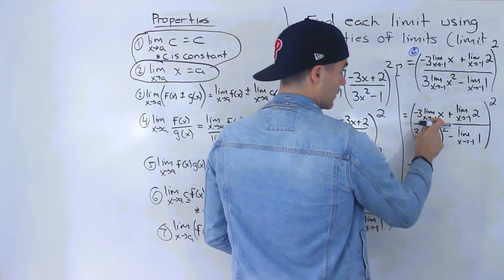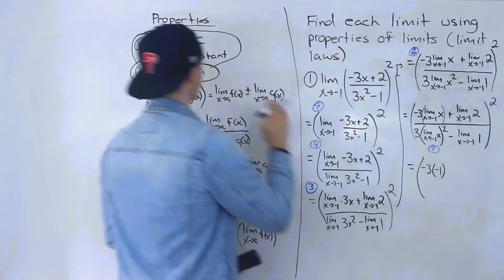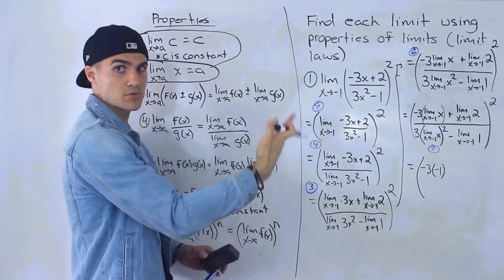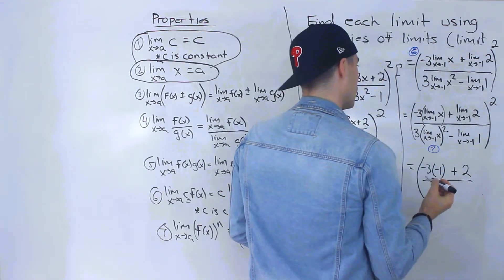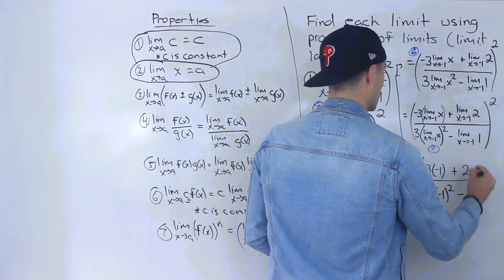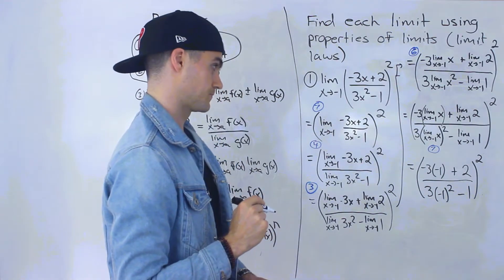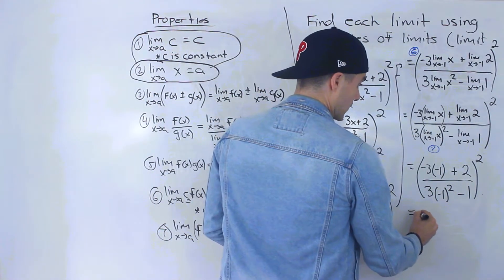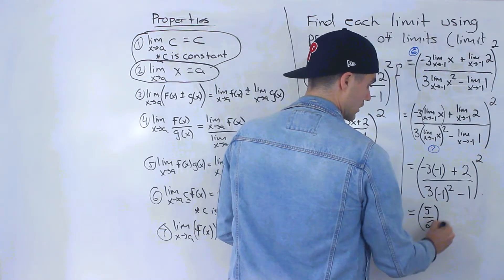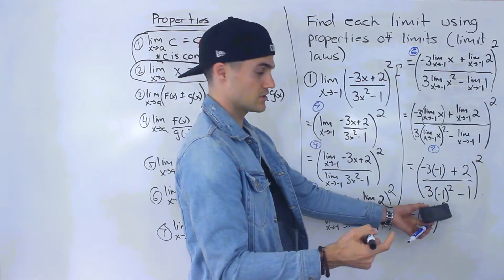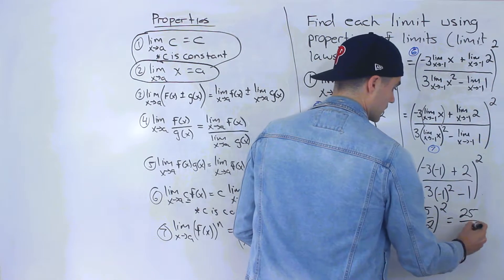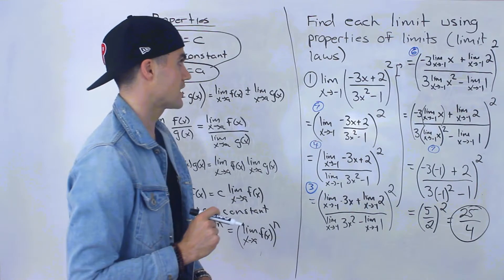Now we substitute. Limit as x approaches negative one of x equals negative one. Limit of a constant is just that constant. So we get negative three times negative one plus two, all over three times negative one squared minus one, close bracket, squared. That gives us negative three times negative one is positive three, plus two is five, over two, squared. Five squared is 25, two squared is four, so the answer to number one is 25 over four.